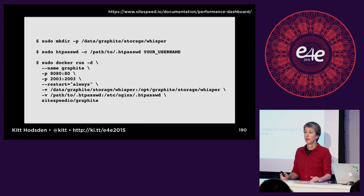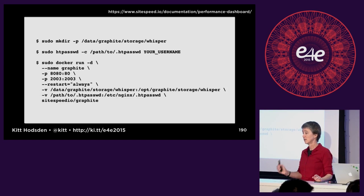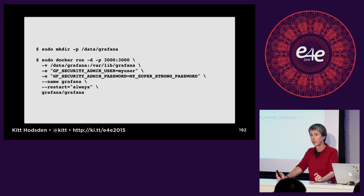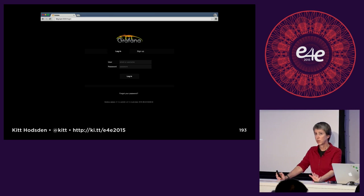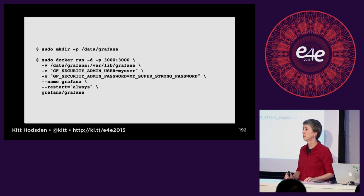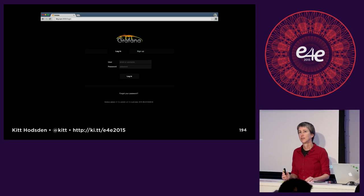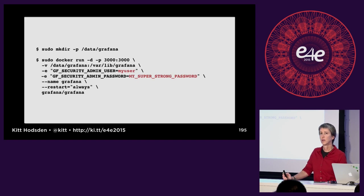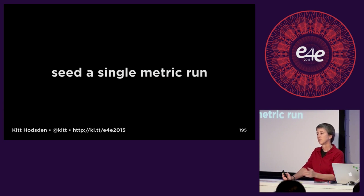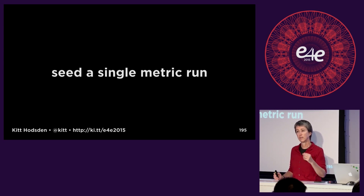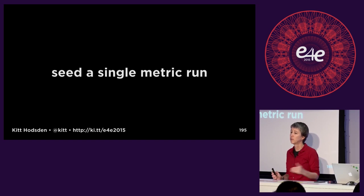You start the Graphite container, then the Grafana container. Because you're going to download these slides, you'll be able to cut and paste these commands. Once you do this, you can log in to your instance. If you paid attention to this slide — I hope you were paying attention to me — you'll see there is actually a username and password in there. Those happen to be the ones available on tiny.run:3000. Then you seed the system with a single metric run to have data to play with for building your graphs.